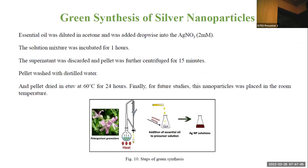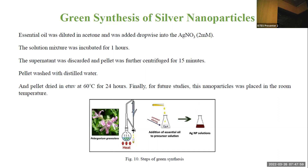For green synthesis of silver nanoparticles, essential oil was diluted in acetone and oil was added dropwise into silver nitrate solution. The solution was incubated in a magnetic stirrer. The solution was centrifuged and the pellet was washed with distilled water. The pellet was then dried.